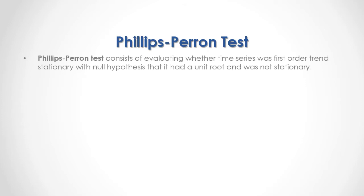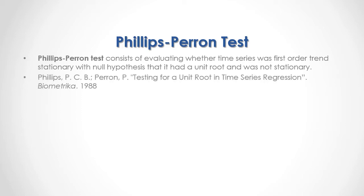The Phillips-Perron test consists of evaluating whether a time series was first order trend stationary, with the null hypothesis that it had a unit root and was not stationary. For full reference, I recommend that you read Phillips-Perron testing for a unit root in time series regression, published by Biometrica in 1988.